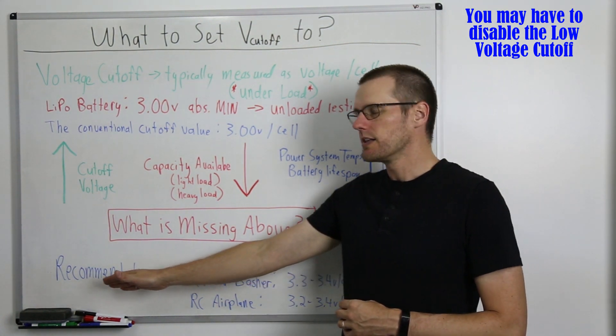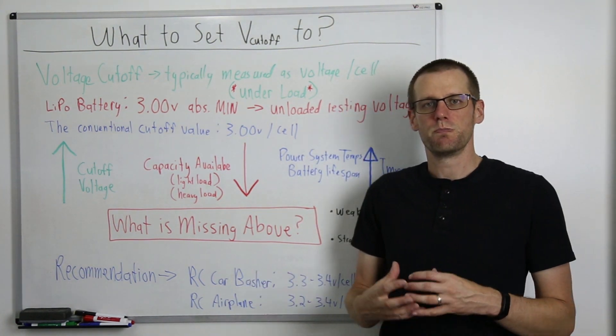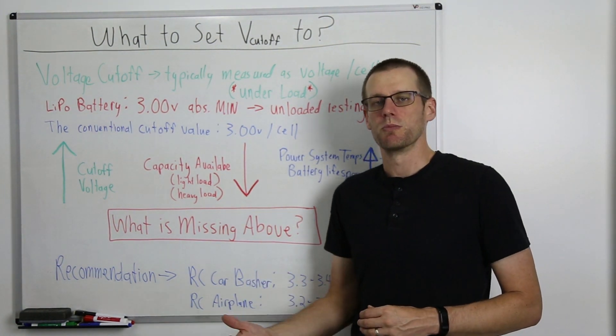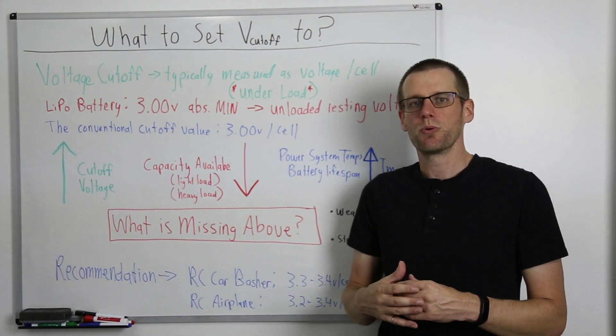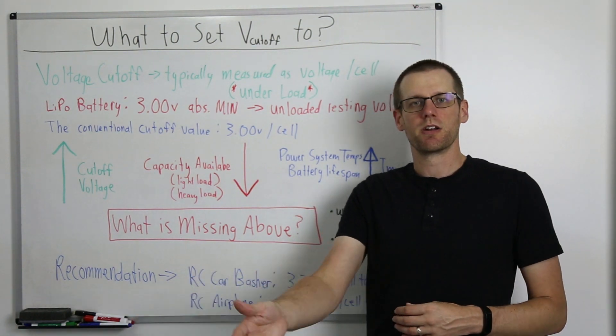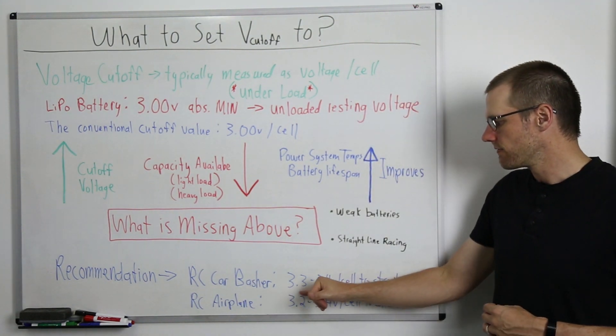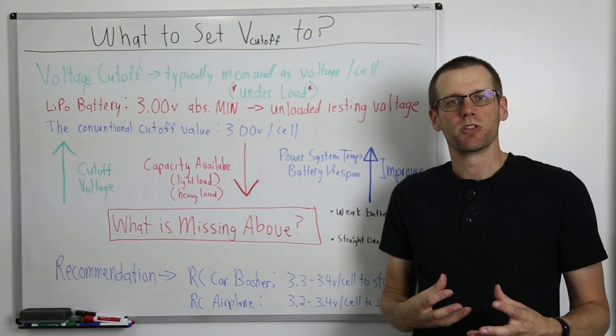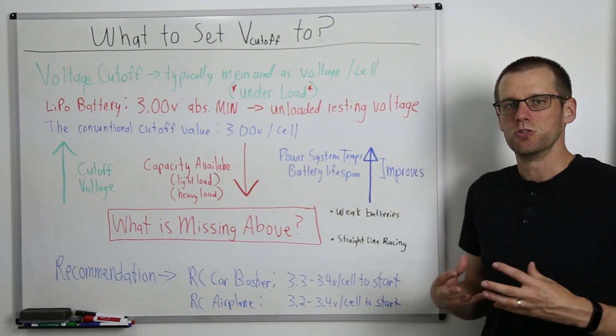My recommendations here as the last item that we have up on the board, if you have a radio controlled car and you're just bashing around, you don't have a high performance system, you just have a mediocre system - because this is a car, you are pretty safe if power were to run out, it'll just end up slowing down and eventually stopping if you do not decide to bring it in right away. In that case, I would recommend a voltage cutoff of around 3.3 to 3.4 volts per cell and that would be to start.